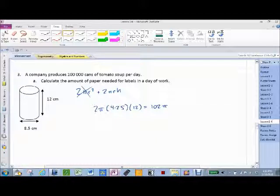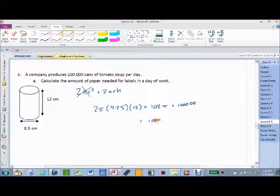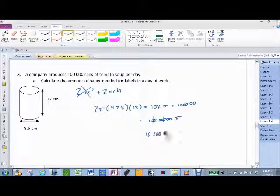That's how many cans. 102 pi is how many cans? How many cylinders did I do the work for? 1. How many cylinders do I need? 100,000. So what do I got to do with this number? Multiply it by 100,000, which means adding how many zeros? 5. So I get 102 and 5 zeros pi, which is 10,200,000 pi centimeters cubed, right?